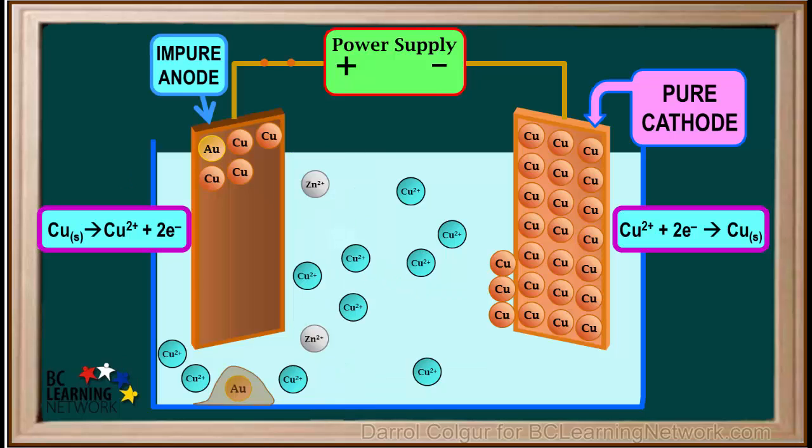So the impure copper anode loses mass, as the small amount of zinc it has gets oxidized, the large amount of copper it has oxidizes, and inactive metals drop off without being oxidized. Looking at the cathode, only Cu 2 plus cations from the solution are reduced and stick to its surface. So the pure cathode stays pure, increasing in mass and size. In this way, impure copper is purified using a type 3 electrolytic cell.